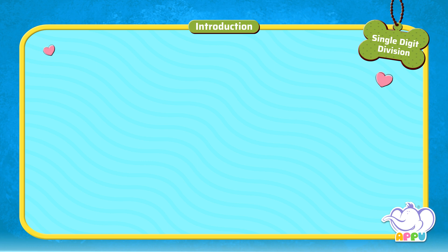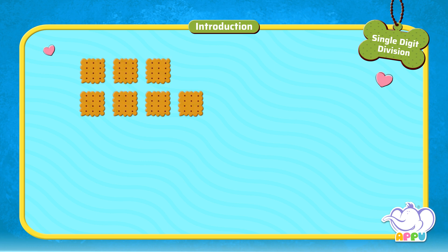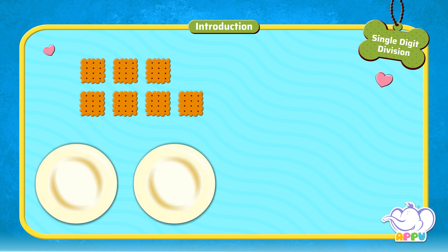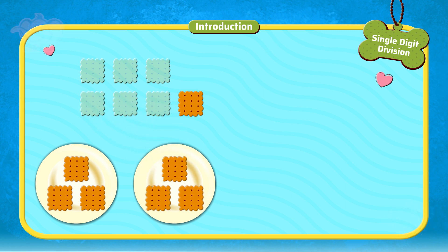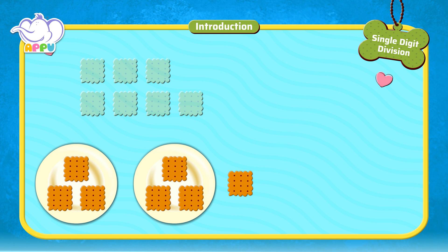Let's look at one more example. Divide 7 biscuits into 2 plates. We get 3 biscuits in each plate and one is left out. Let's see how this is done using long division.